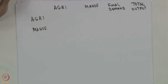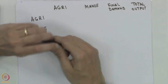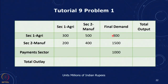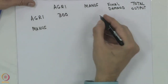We are considering a two-sector economy with an input-output table as shown for 2017. We are asked to fill in the blanks in the input-output table and compute the A matrix and the L matrix. Then we consider two cases: one where agricultural final demand increases by 200 million rupees in 2018 while manufacturing final demand remains constant, and a second where agricultural final demand remains constant while manufacturing demand increases by 200 million rupees.